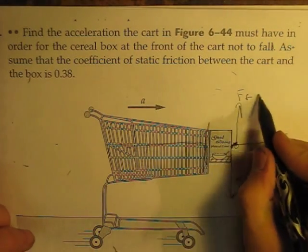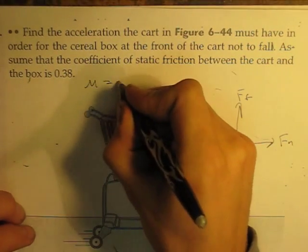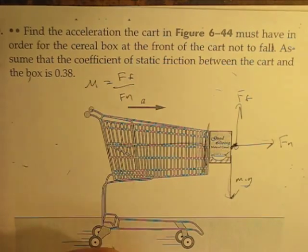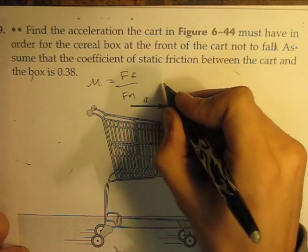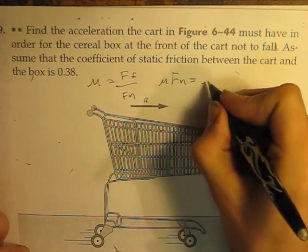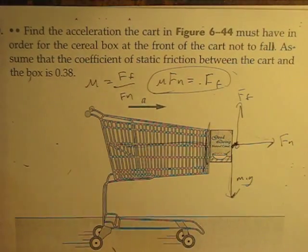So let's start with the force of friction. Mu equals the force of friction divided by the normal force. So that's just the same thing as writing mu times the normal force equals the force of friction. And that's just a formula you should know.